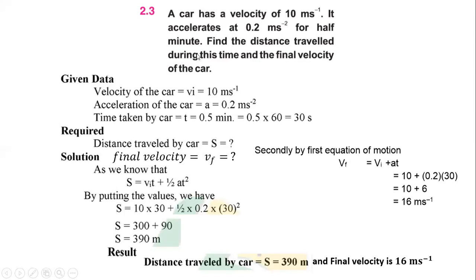We need to find the distance traveled during this time and the final velocity of the car — two parameters to evaluate. With VI, A, and T available, we use the second equation of motion to find distance: S = VI·T + ½·A·T². Putting in values: 10 × 30 + ½ × 0.2 × 30² = 300 + 90 = 390 meters distance.